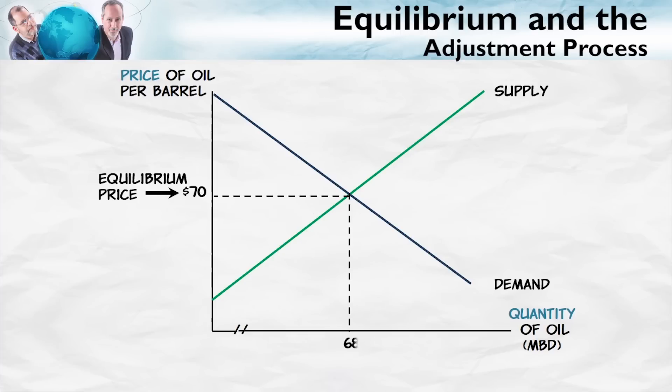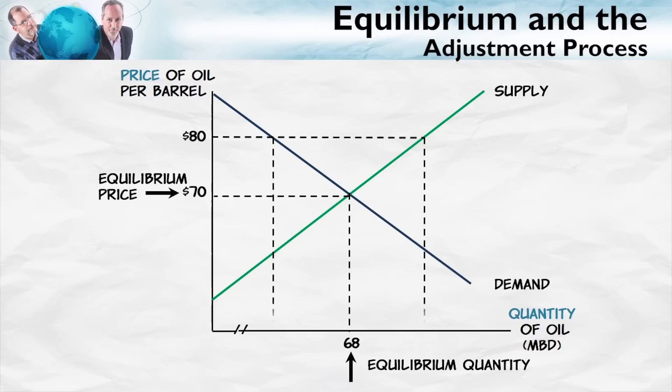Here's the equilibrium price — the price where the quantity demanded is equal to the quantity supplied. Why is that the equilibrium price? Because at any other price, forces are put into play which push the price towards the equilibrium price.